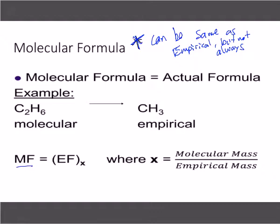Molecular formula equals the empirical formula with X. X on the outside of a parenthesis gets distributed inside to all the other subscripts that each element would have. So what we need to do is figure out X. What is X? It's a ratio of the molecular mass, which is the actual mass, over the empirical mass.